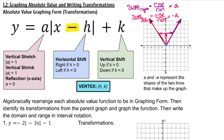Unfortunately, it's not always given to us in graphing form, as you can see for our first example. So algebraically, rearrange each absolute value function to be in graphing form. Then identify its vertex, its transformations from the parent graph, and graph the function. Then write the domain and range in interval notation.